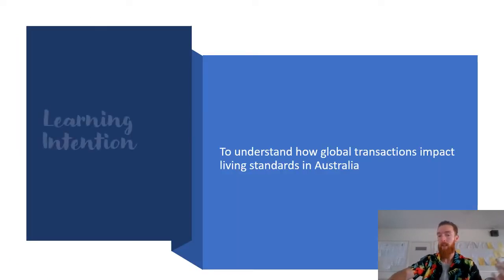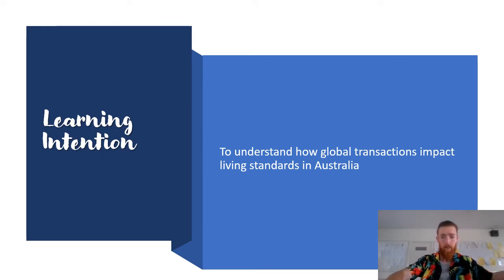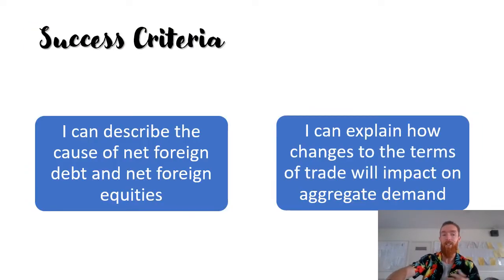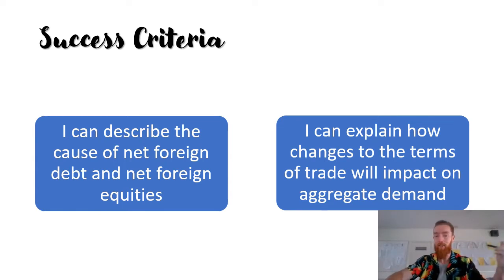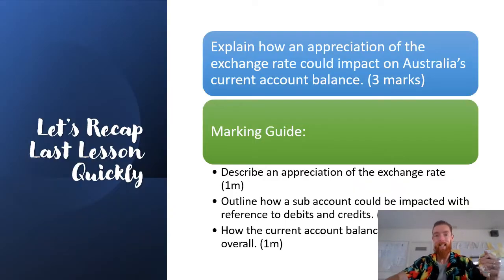Our learning intention for this topic is to understand how global transactions impact living standards in Australia, specifically through net foreign debt, net foreign equities, and the terms of trade. Your success criteria for today is that you can describe the cause of net foreign debt and net foreign equities, and you can explain how changes to the terms of trade will impact on aggregate demand. But before we do all of that, we're going to start by recapping last lesson.